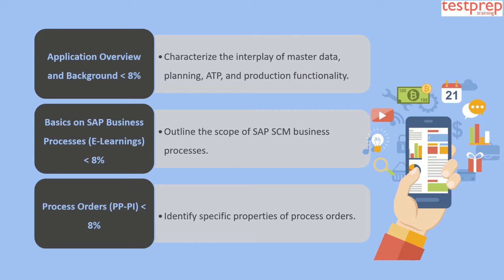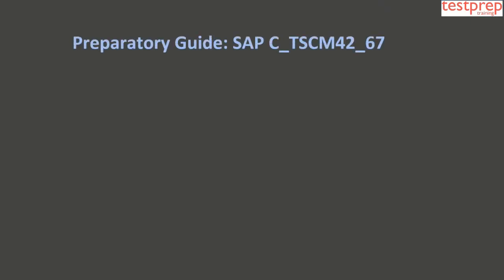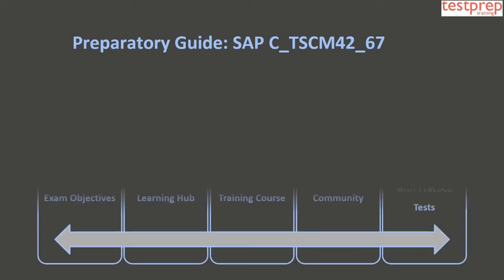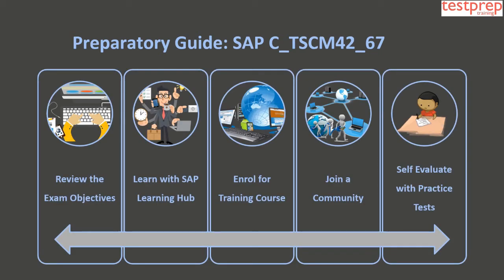Domain 8 is Basics on SAP Business Processes E-Learnings, less than 8 percent of the exam, outlining the scope of SAP SCM business processes. Domain 9 is Process Orders PP-PI, less than 8 percent, identifying the specific properties of process orders.